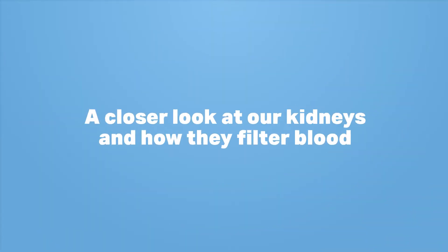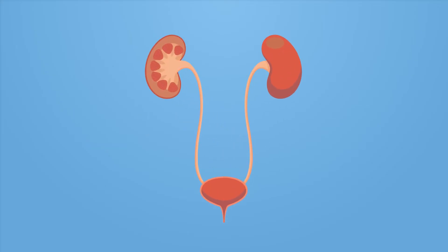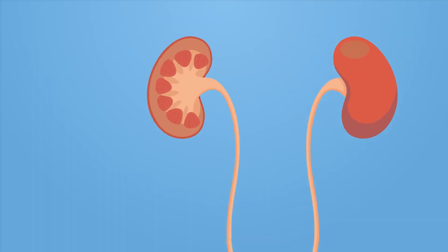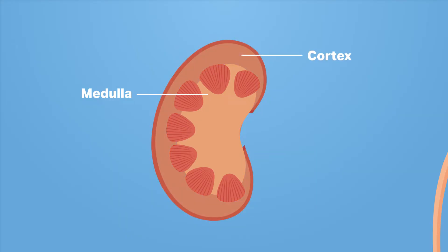Let's take a closer look at our kidneys and how they filter the blood. Our kidneys are made up of several parts. The innermost part is called the medulla, and this is surrounded by the cortex. The urine created by filtration of our blood is collected by the wide part at the top of the ureter, which is called the pelvis, and is then funnelled into the rest of the ureter.